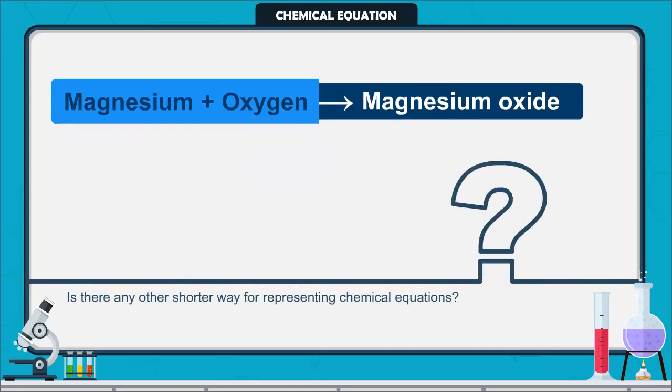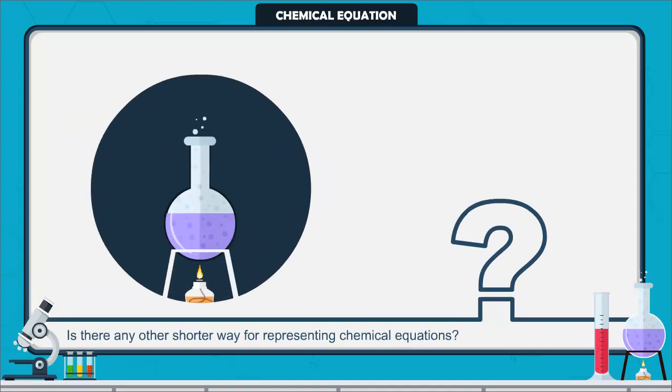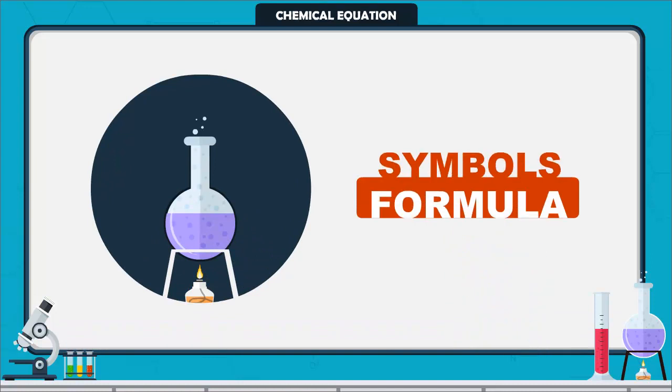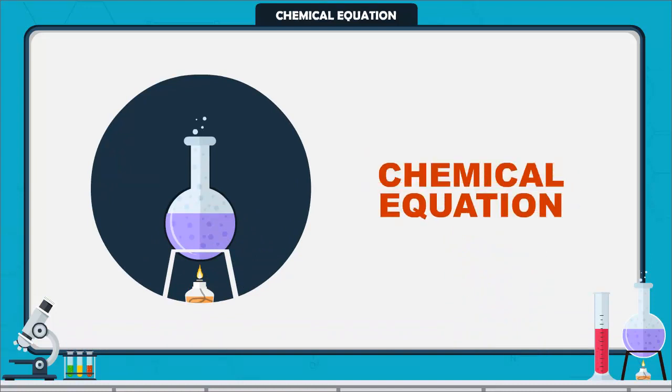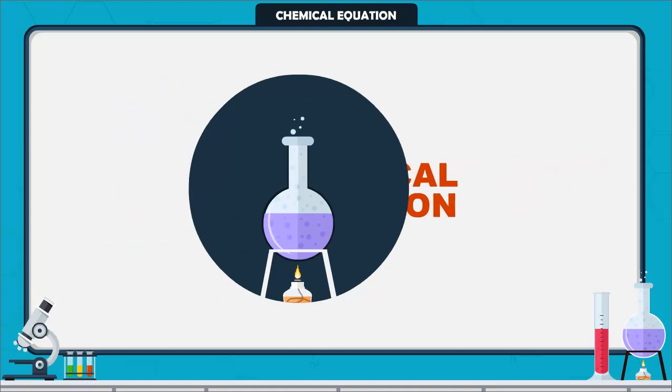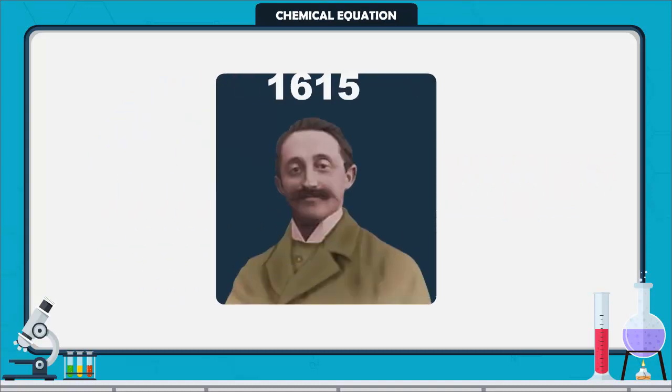Is there any other shorter way for representing chemical equations? Representation of chemical reaction using symbols and formulae of the substances is called chemical equation. Chemical equations were first formulated by the French chemist Jean Bagan in the year 1615.